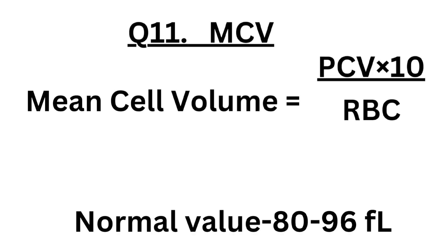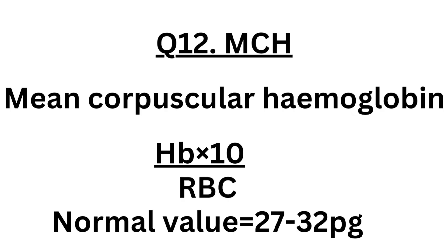Question number eleven: MCV — mean cell volume. Formula: PCV × 10 divided by RBC. Normal value: 80 to 96 femtoliters. Question number twelve: MCH — mean corpuscular hemoglobin. Formula: Hb × 10 divided by RBC count. Normal value: 27 to 32 picograms.